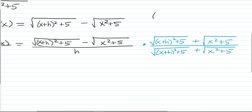Well, you probably recall that if you multiply a minus b times a plus b, that you get a squared minus b squared. And in this case, our a is the square root of x plus h squared plus 5 here, and our b is here.